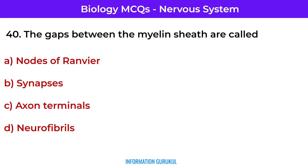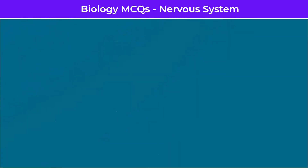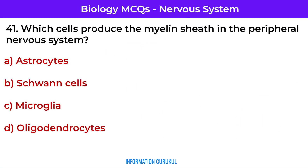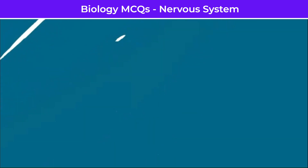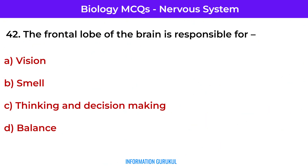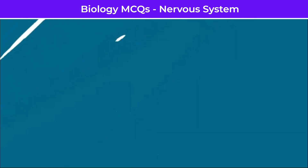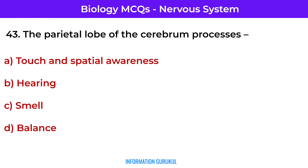The gaps between the myelin sheath are called nodes of Ranvier. Which cells produce the myelin sheath in the peripheral nervous system? Schwann cells. The frontal lobe of the brain is responsible for thinking and decision making. The parietal lobe of the cerebrum processes touch and spatial awareness.